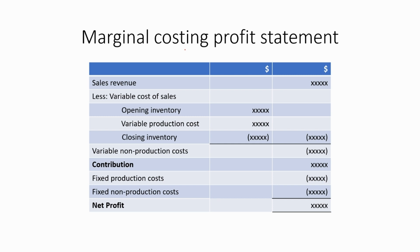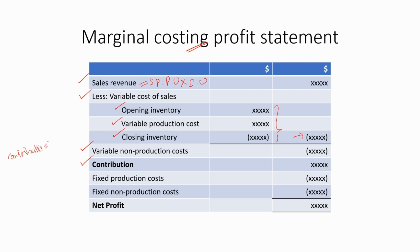This is the marginal costing profit statement, used by management accountants. The first line is the sales revenue — the total revenue amount, which is equal to selling price per unit multiplied by the number of sales units. Then we deduct the variable cost of sales: opening inventory plus variable production cost minus closing inventory. We deduct this from sales revenue, then deduct the variable non-production costs.